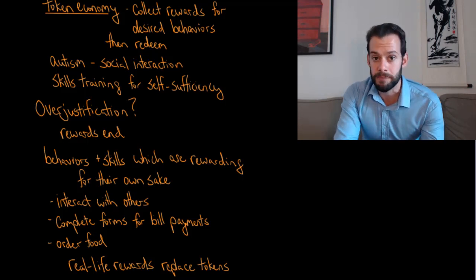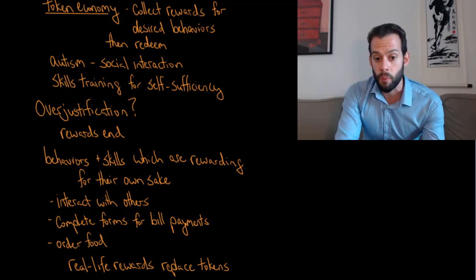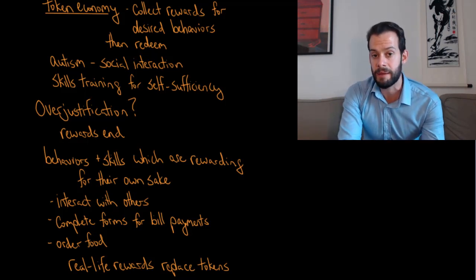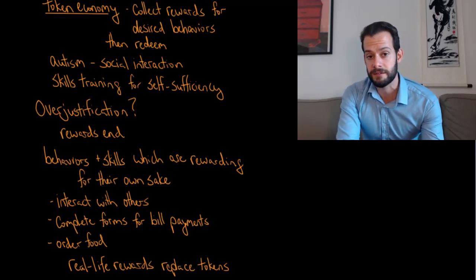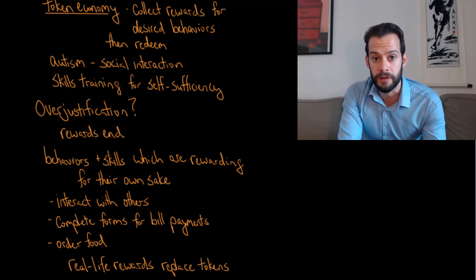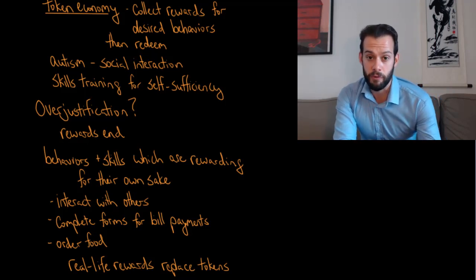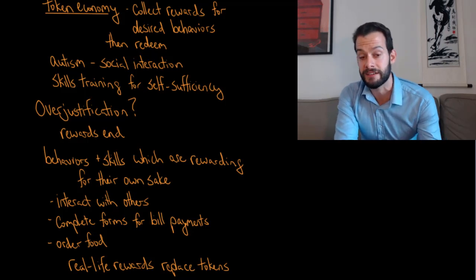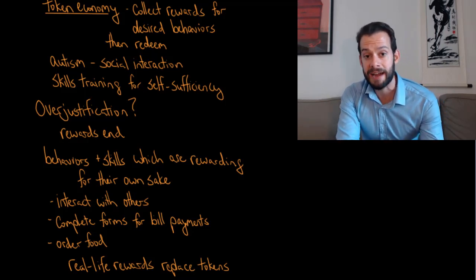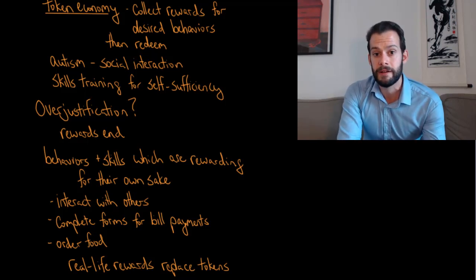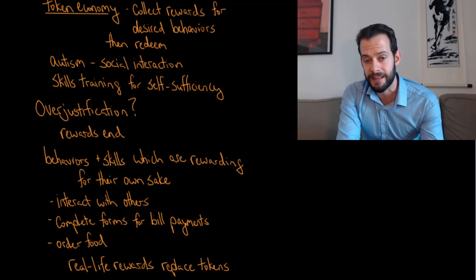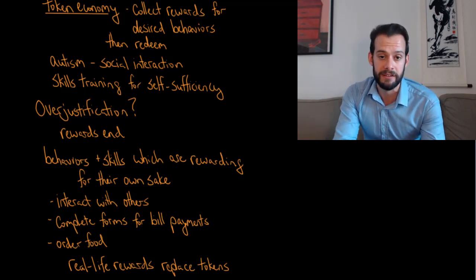Similarly, people who learn to complete forms and earn tokens find that completing forms later has a built-in reward — now they can pay bills independently or live on their own more successfully. They might be able to make a phone call and order food for delivery, whereas before they had anxiety about that or couldn't manage the information correctly. By practicing and getting tokens, now they can do it for real, and the real-life reward replaces the use of tokens.